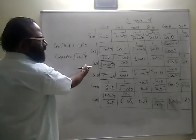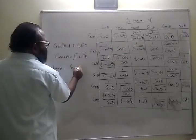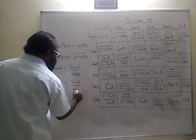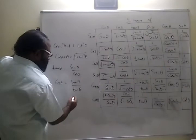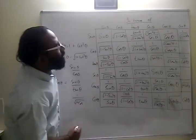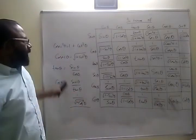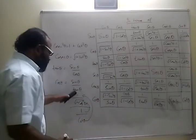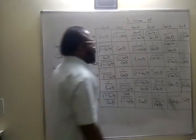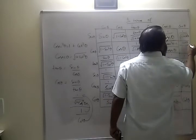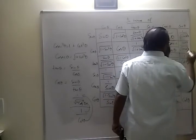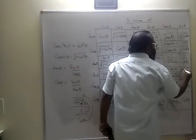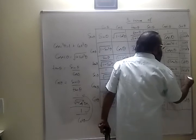For cos theta: tan theta equals sin theta by cos theta, so cos theta equals sin theta by tan theta. Sin theta is 1 by root of 1 plus cot squared theta and tan is 1 by cot theta, so cos theta equals cot theta by root of 1 plus cot squared theta. Secant theta is 1 by cos theta, so secant theta equals root of 1 plus cot squared theta by cot theta.